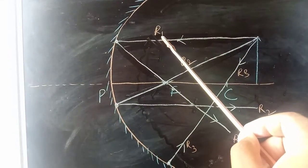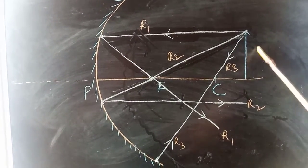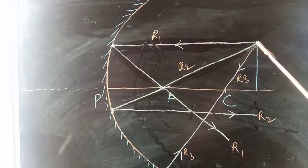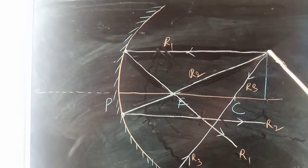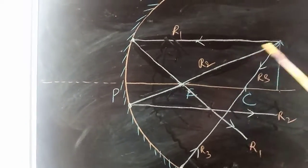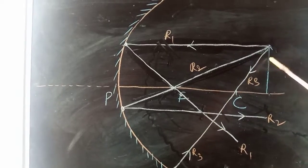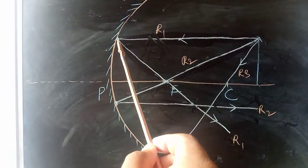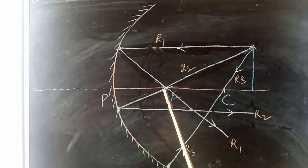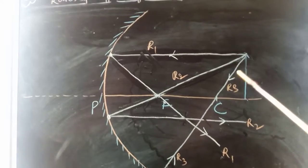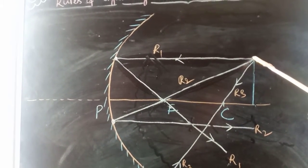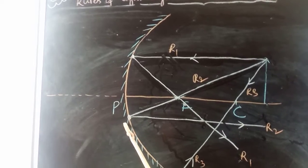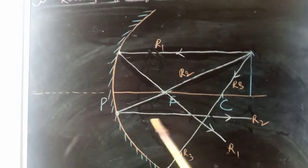In the combined diagram, I have situated an object on the principal axis beyond C. The object emits three incident rays from its tip. The first ray goes parallel to the axis, hits the mirror, and according to Rule Number One, reflects through the focal point. The second ray, according to Rule Number Two, goes from the tip of the object through the focal point, meets the mirror, and reflects parallel to the principal axis.